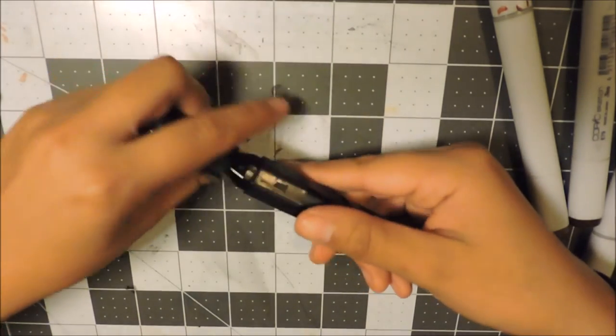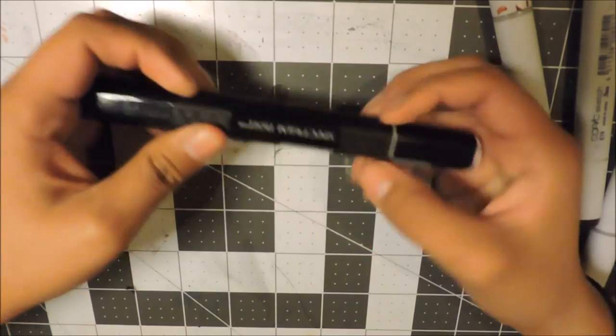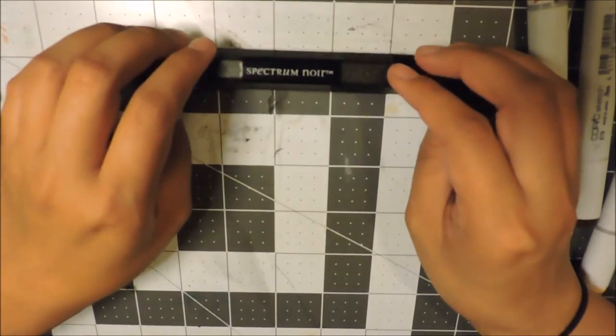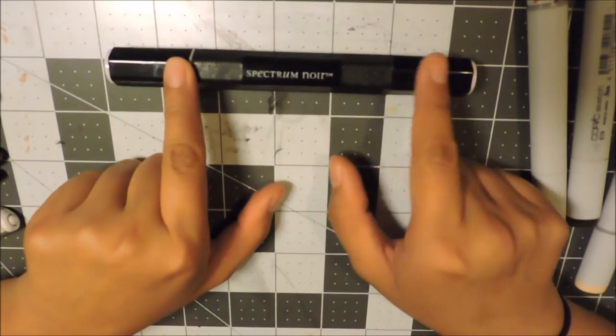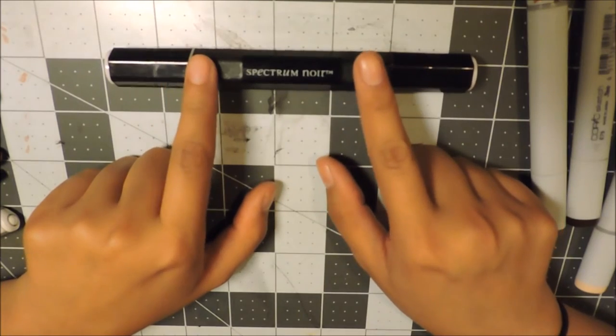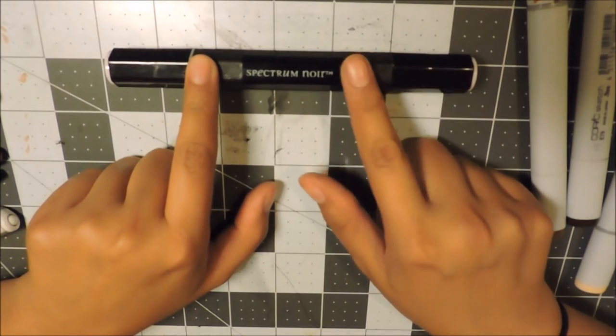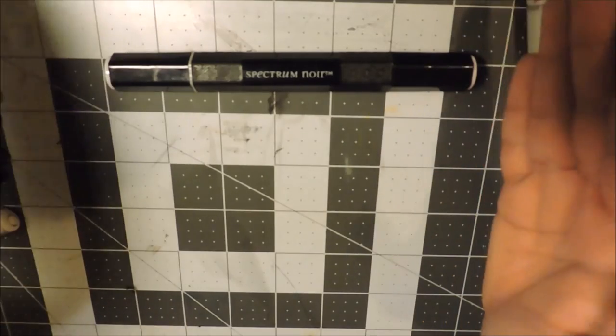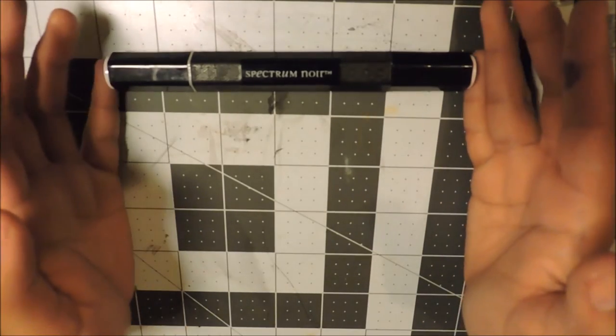The Spectrum Noir come with a bullet tip and a chisel tip. These ones are actually really hard to get off. It does come in a larger set but these actually do not come in brush nibs. You can change them out for brush nibs but they're gonna cost extra.